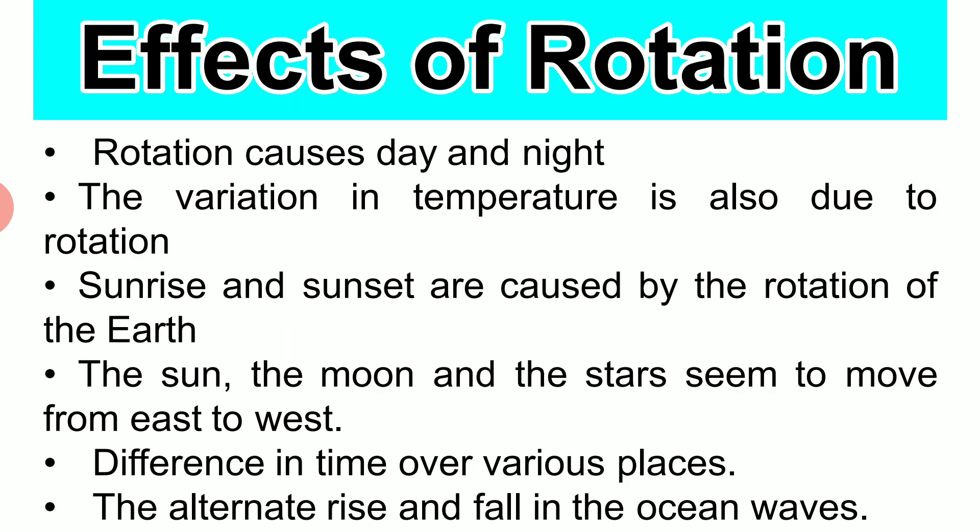Effects of rotation. First, rotation causes day and night. The earth rotates on its axis from west to east in 24 hours. Parts of the earth which face the sun have day and the parts which do not face the sun have night. Duration of day and night is not equal at all places on the earth because of the inclined axis.